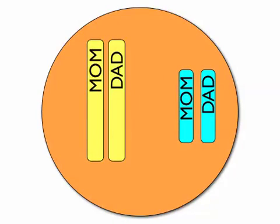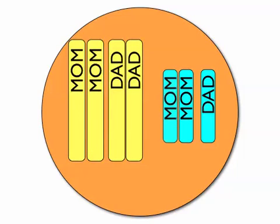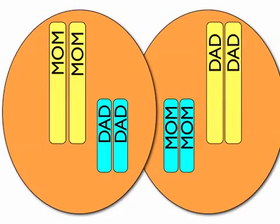Let's look at meiosis. The homologous pairs first replicate — they do their DNA replication. Notice there's a mom chromosome and a dad chromosome. This cell I drew only has two pairs, or four chromosomes — in our real cell we'd have 23 pairs, or 46. The chromosomes hang out together in pairs, and eventually what ends up happening is they make two cells where the pairs say goodbye to each other. So you have mom's big chromosome in one cell and dad's big chromosome in the other, and dad's little one in that cell and mom's little one in the cell on the right.